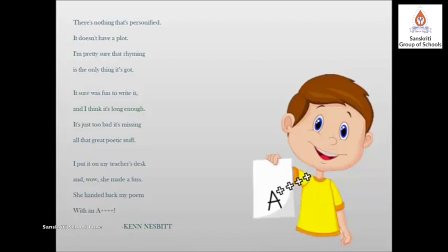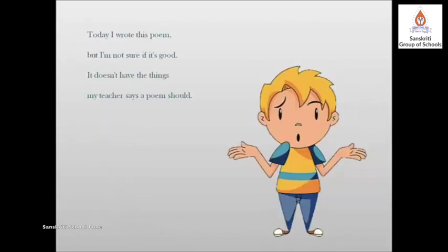Now let's understand the poem stanza by stanza. 'Today I wrote this poem, but I am not sure if it's good. It doesn't have the things my teacher says a poem should.' The child has written a poem but is unsure if it's a good one, because he remembers his teacher's lesson — the qualities of a good poem — and compares that his poem does not have a single attribute that his teacher had explained.